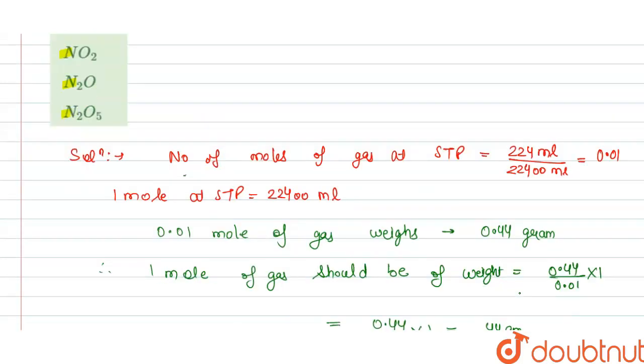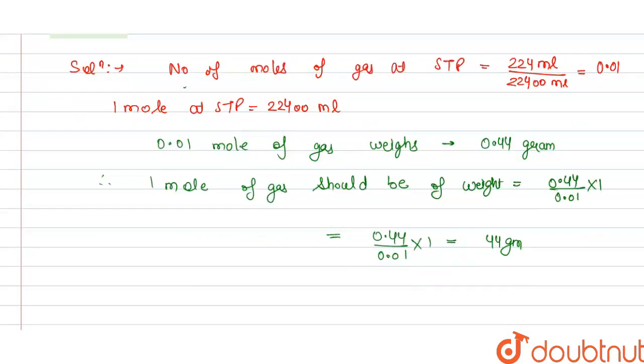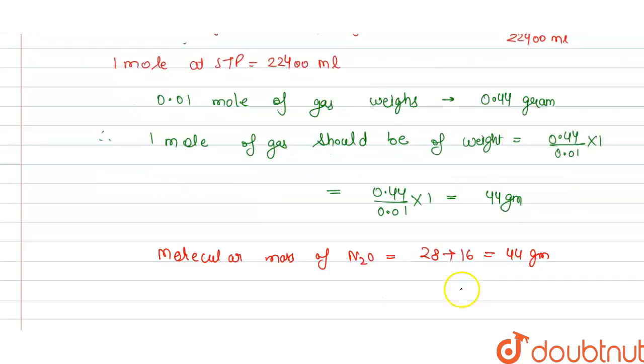And out of these we know that N2O has the molecular mass of 44. So from this we can say that our answer is N2O, the gas is N2O.